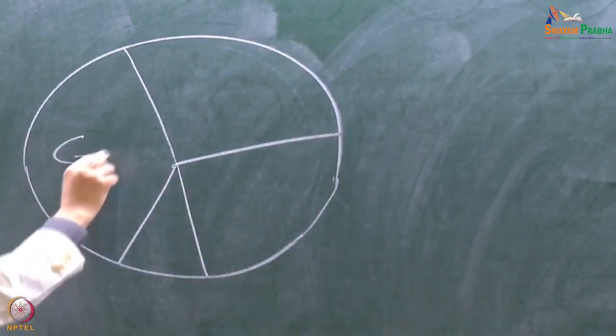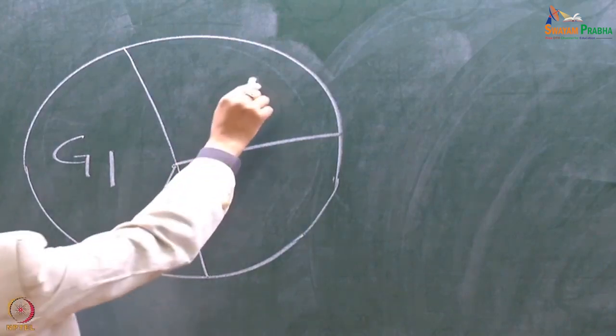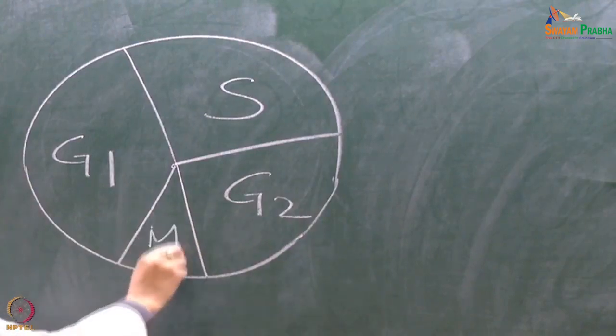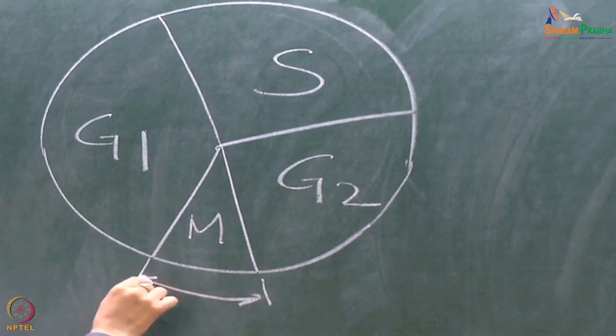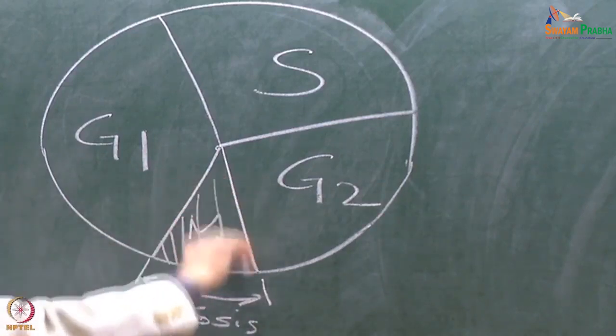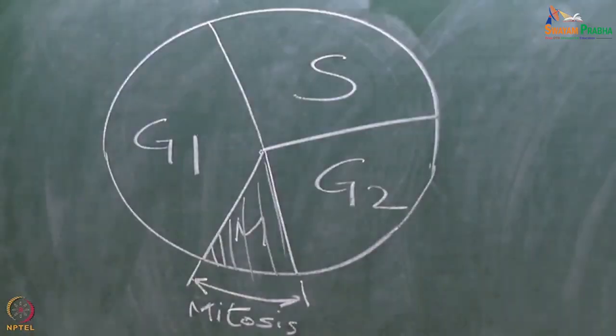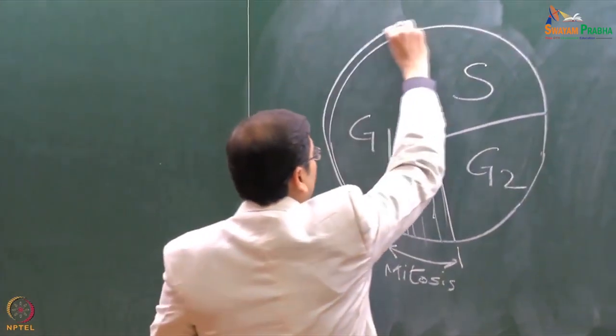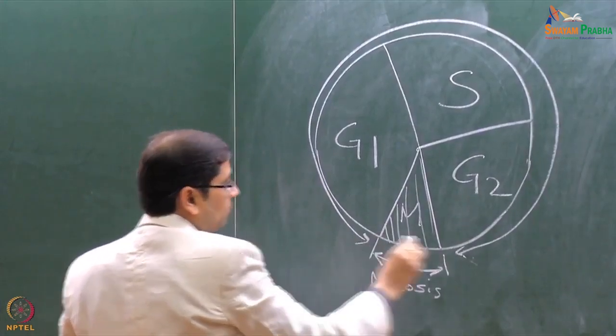In the cell cycle, the mitotic phase alternates with a large growth phase called interphase. This entire cell cycle can be divided into multiple phases: G1, S, G2, and then the mitotic phase. The mitotic phase is much smaller, while the remaining part — essentially the interphase or growth phase — is much bigger, comprising almost 90% of the overall cell cycle. Interphase prepares the cell and ensures it is ready for division.